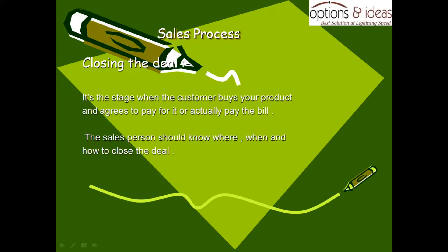The salesperson should know where, when, and how to close the deal. This is very important. An effective salesperson will know exactly how to read the deal. This is the indication — the hint — from the customer. Then the salesperson can complete the sale.